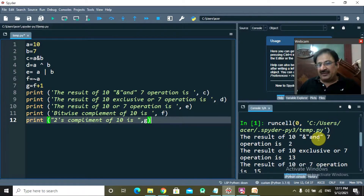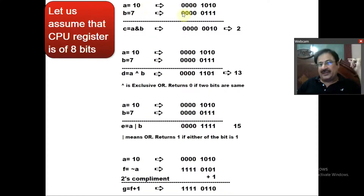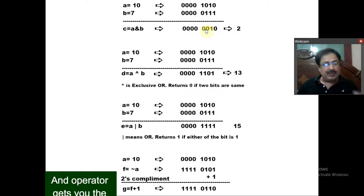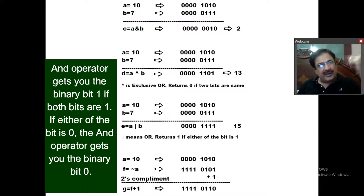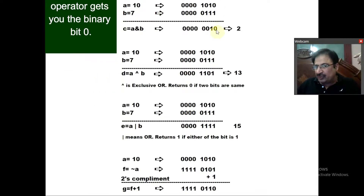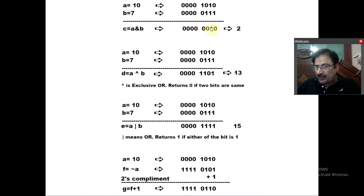The result of 10 AND 7 — the AND operator — is 2. How? This is the binary digit of 10 (using an 8-bit register: 1, 2, 4, 8, so 10 in binary). The binary digit of 7 is shown. The AND operator: if both bits are 1 it gives 1; if either bit is 0 it gives 0. So: 0 AND 1 = 0, 1 AND 1 = 1, 0 AND 1 = 0, 1 AND 0 = 0, and the rest are already 0.